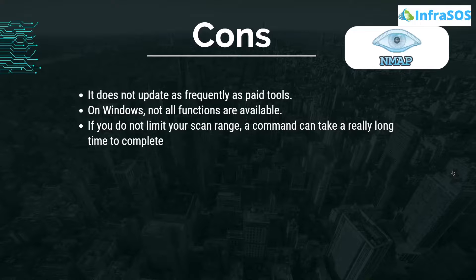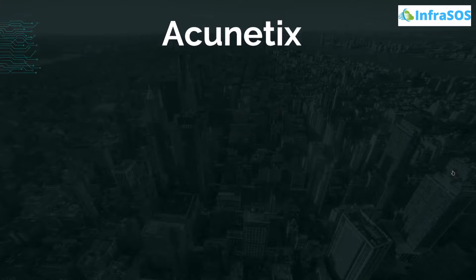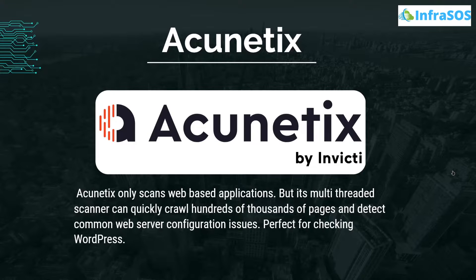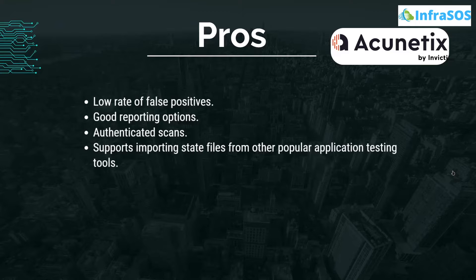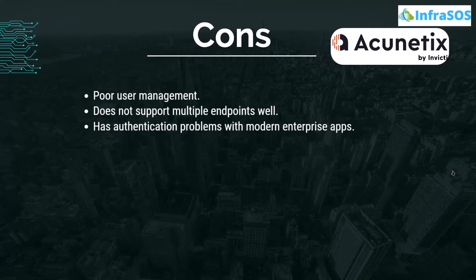Last on our list we have Acunetix. Acunetix only scans web-based applications, but its multi-threaded scanner can quickly crawl hundreds of thousands of pages and detect common web server configuration issues, making it the perfect tool for checking WordPress. Pros include a low rate of false positives, good reporting options, authenticated scans, and support for importing state files from other popular application testing tools. Cons include poor user management, it does not support multiple endpoints well, and it has authentication problems with modern enterprise applications.